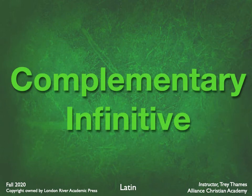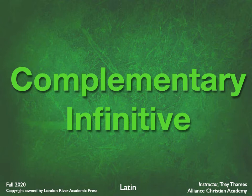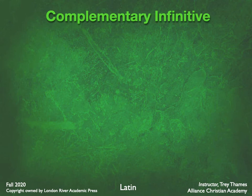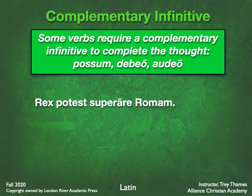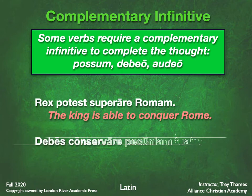The next section is something called the complementary infinitive, and this may be new for you, so take your time on this. The second principal part of every verb — like amo, amare — is the infinitive, simply translated as 'to' whatever the verb is. So for amo, amare, it's 'to love'; for moneo, moneri, it means 'to warn.' Some verbs require a complementary infinitive to complete the thought — specifically verbs like possum, debeo, and audeo.